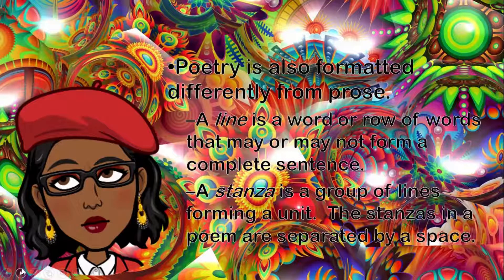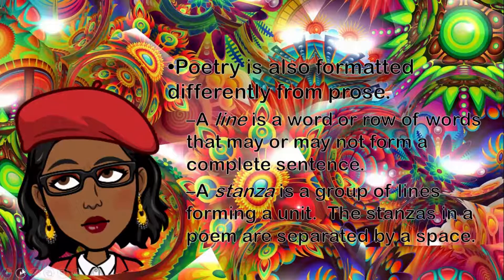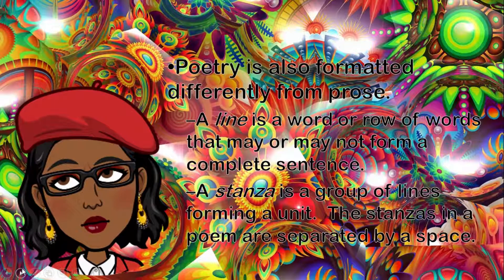A poem is a written or creative piece and there is a certain format that a poem follows. Unlike essays, a poem does not have paragraphs and it might not have complete sentences. That is how we distinguish a poem from something that we normally read like books and essays. Here is what a poem does have: it consists of lines or rows of words that may or may not form sentences. And it has stanzas — a stanza is a group of lines separated by a space.